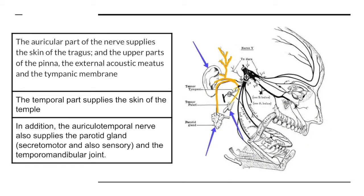As we can see in this diagram, behind the neck of the mandible it is ascending upwards. The auricular part of the nerve supplies the skin of the tragus and the upper parts of the pinna, the external acoustic meatus, and the tympanic membrane. The rest of the ear is supplied by the greater auricular nerve and the auricular part of the vagus nerve.